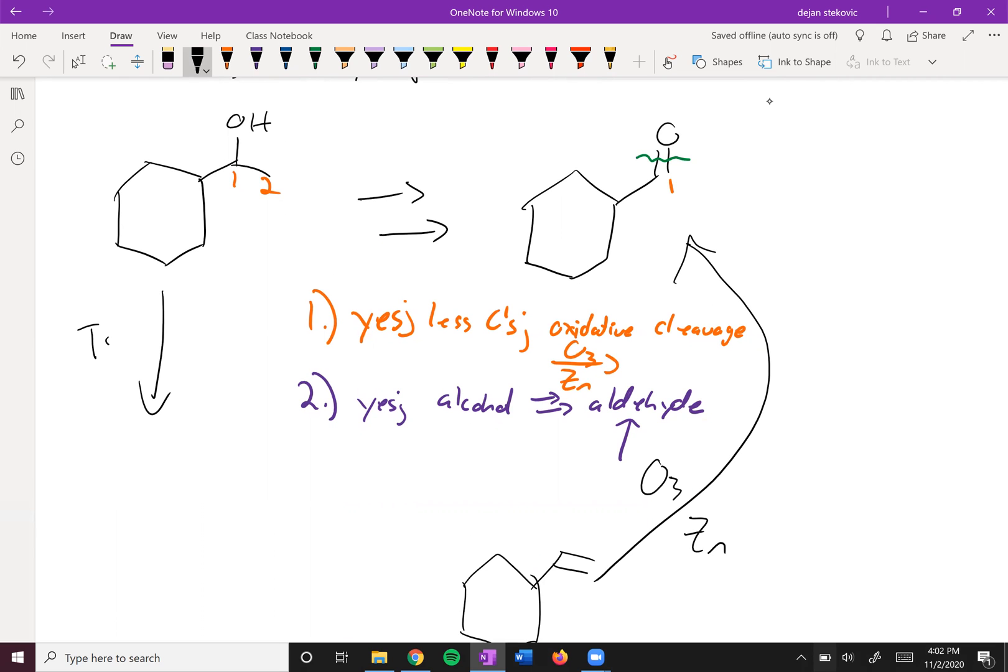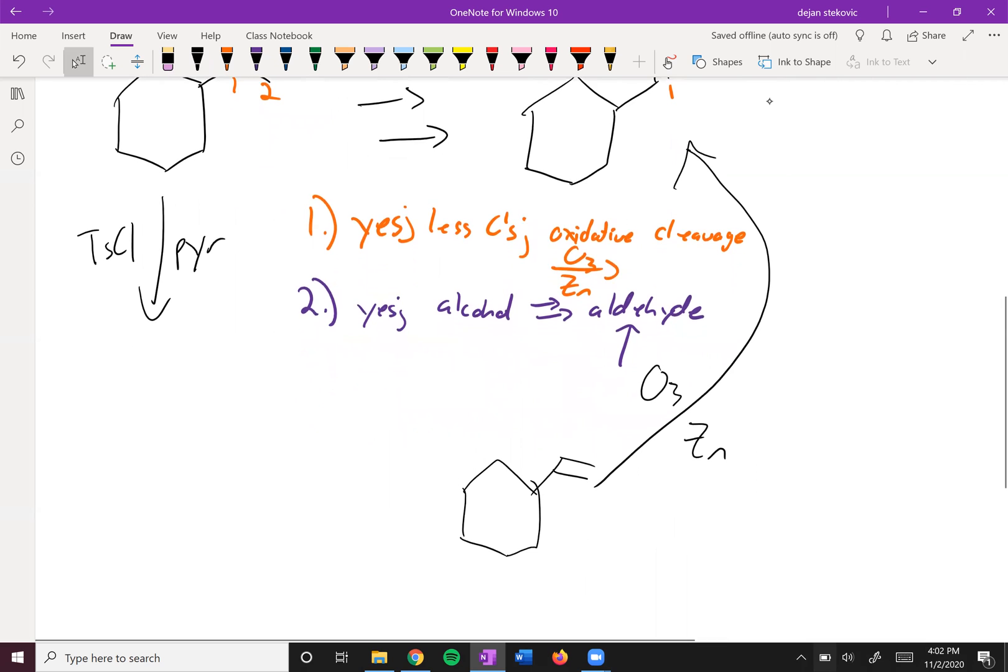And so we need to either get rid of this alcohol somehow or transform it into a better leaving group. In order to make alcohols into better leaving groups, you can add some tosyl chloride and some pyridine.